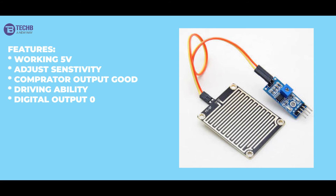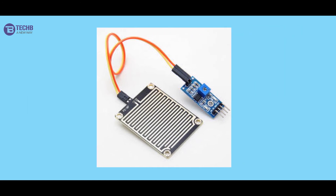The digital output is 0 and 1, and there is also an analog voltage output on A0. We use the raindrop sensor in this lab for different projects — in a tinkering lab or in daily life.